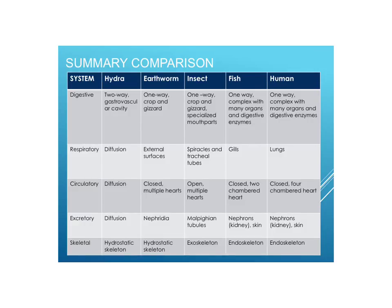To finalize, here's a summary comparison of some organisms: a hydra (a cnidarian, very simple), an earthworm, an insect (a representative arthropod), a fish, and a human. Digestion in a hydra is two-way; in an earthworm, insect, fish, and human it's one-way. Respiration is by diffusion for many simple organisms, but fish and humans have gills and lungs. Circulation is by diffusion in simple organisms, while earthworms have a closed system, insects have an open system, and fish and humans have closed systems. The skeletal system for hydra and earthworms is hydrostatic, insects have exoskeletons, and vertebrates have endoskeletons.